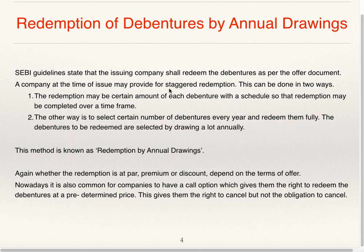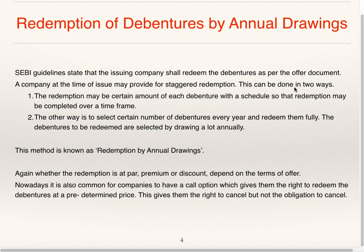Staggered redemption can be done in two ways. The redemption may be a certain amount of each debenture with a schedule so that redemption may be completed over a time frame. For example, supposing a debenture has a face value of rupees 100 — rupees 30 will be paid in one year, remaining 30 in another year, and remaining 40 in yet another year. That is how some part of each debenture is redeemed year-wise as given in the offer document.